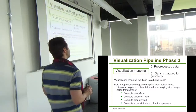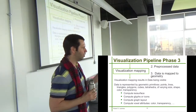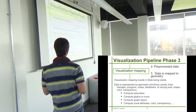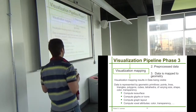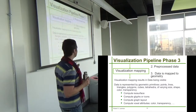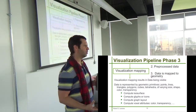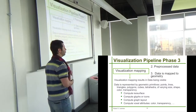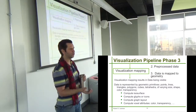The visualization mapping phase is the primary phase we're interested in. Once we've done data acquisition and data enhancement, we want to transform that data into shapes and colors. We use the terminology geometric primitives — primitive geometry: points, lines, triangles, polygons, cubes, tetrahedra — along with attributes like size, shape, color, and transparency. We take the raw data and put it onto shapes. Sometimes we have straightforward mappings, and sometimes we have very complicated algorithms that do the transformation and extract features.